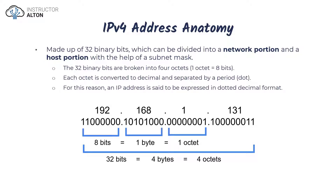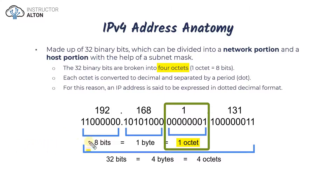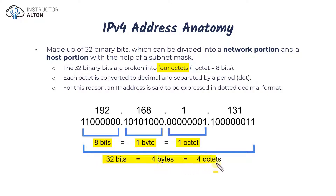There are multiple ways to express the 32 binary bits. They're broken into four octets — each area separated by a dot is called an octet. Each octet has eight bits: one, two, three, four, five, six, seven, eight. A bit is also equal to a byte, but you typically hear people call them octets. So 32 bits equals four bytes, or four octets.